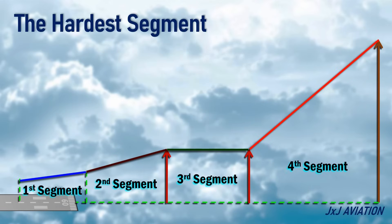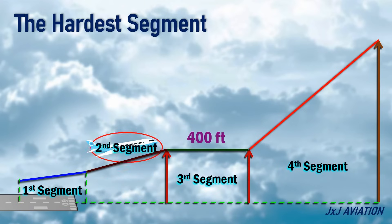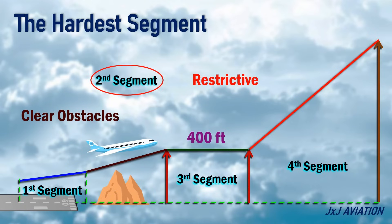The hardest segment. Out of the four takeoff segments, the second segment, which is the climb to 400 feet, is the hardest segment, or the most restrictive. Before every takeoff, it must be ensured that the second segment climb requirement is met. This is to ensure the aircraft can clear all obstacles in its climb path.